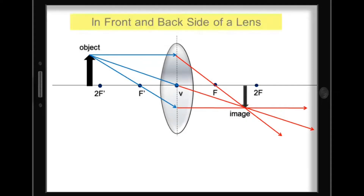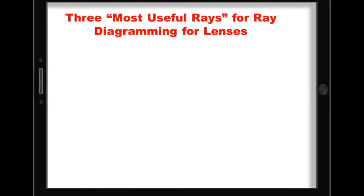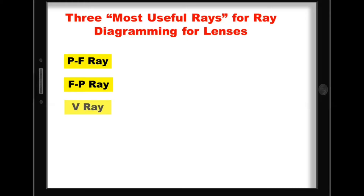Knowing the in-front and back side of a lens will help you determine the location of an image. Remember that the side of a lens where the object is located is the in-front, while the remaining side is the back side or behind the lens. For ray diagramming for lenses, there are three most useful rays: the PF ray, the FP ray, and the V ray.